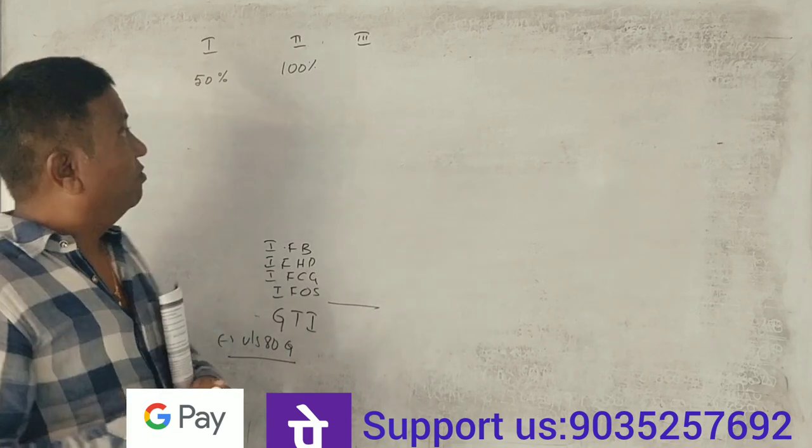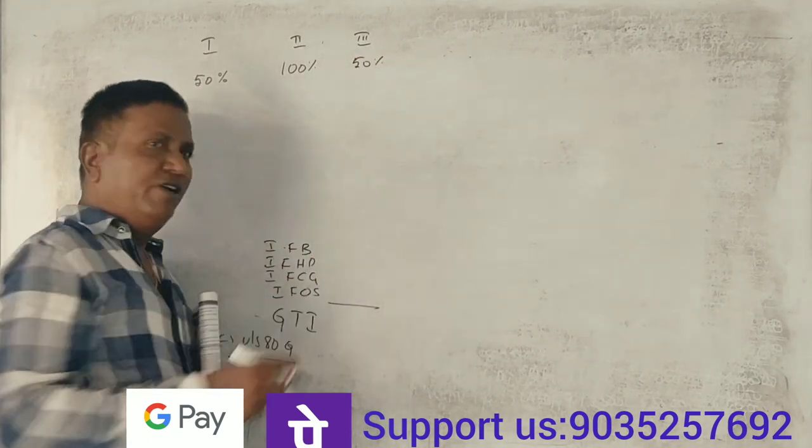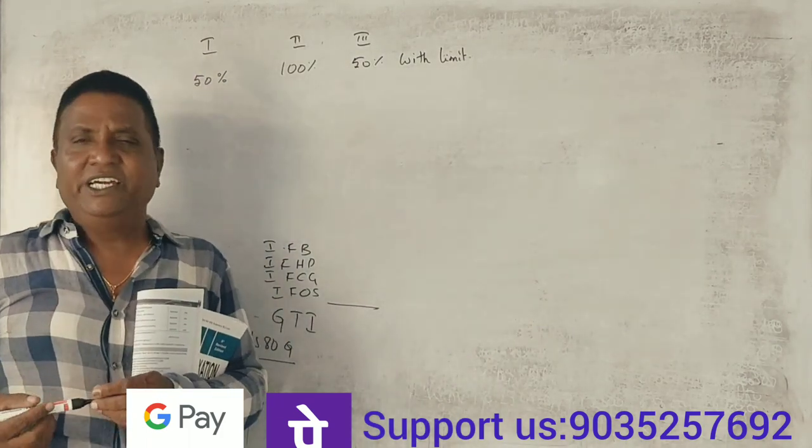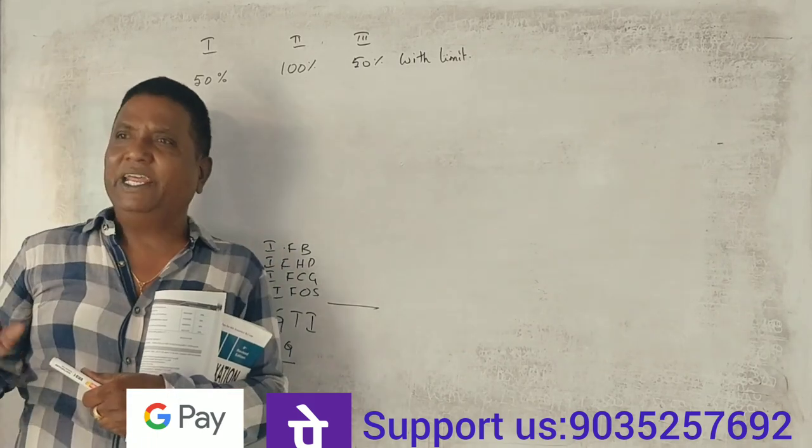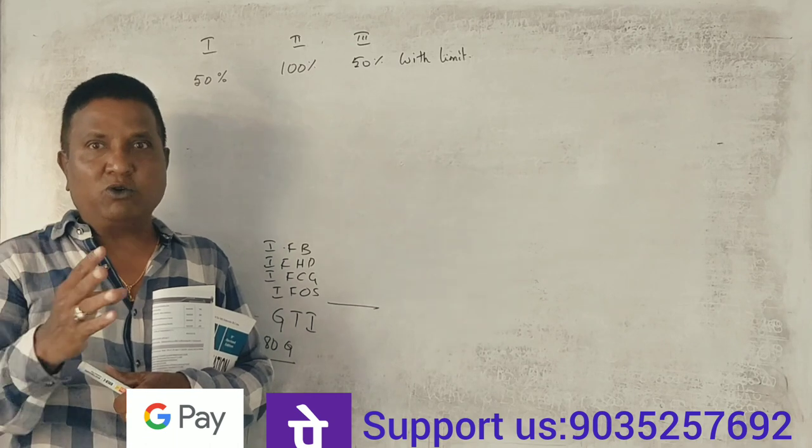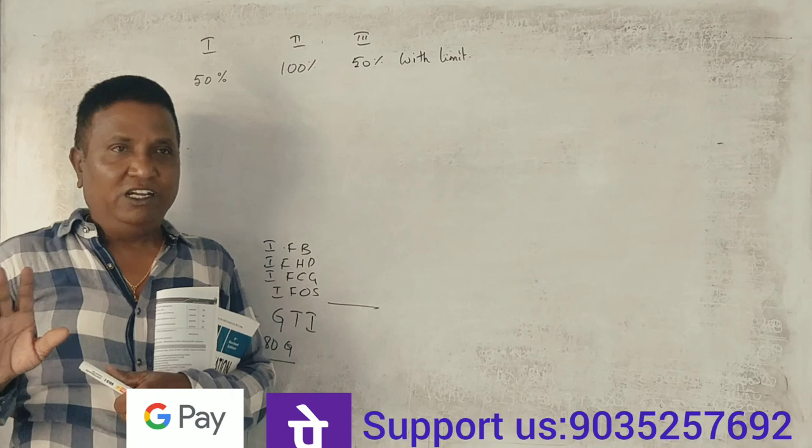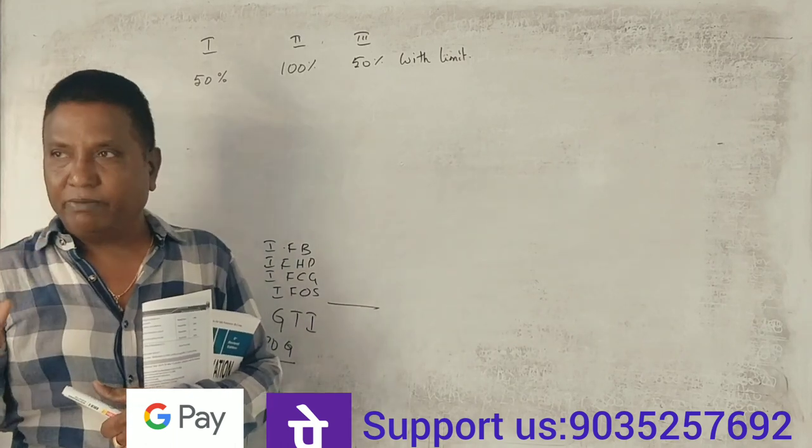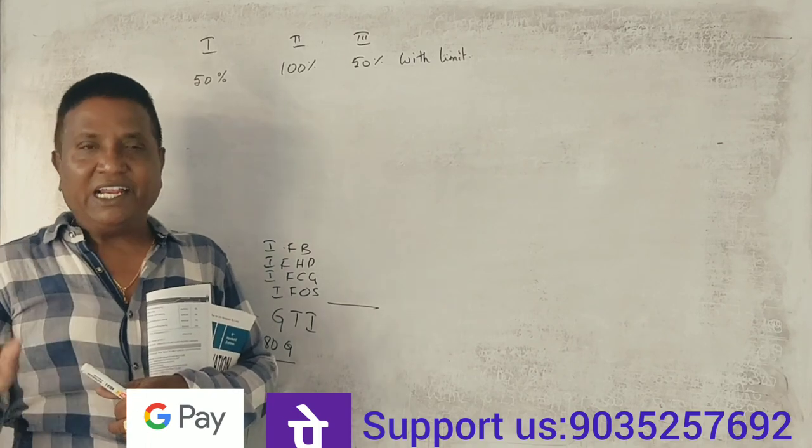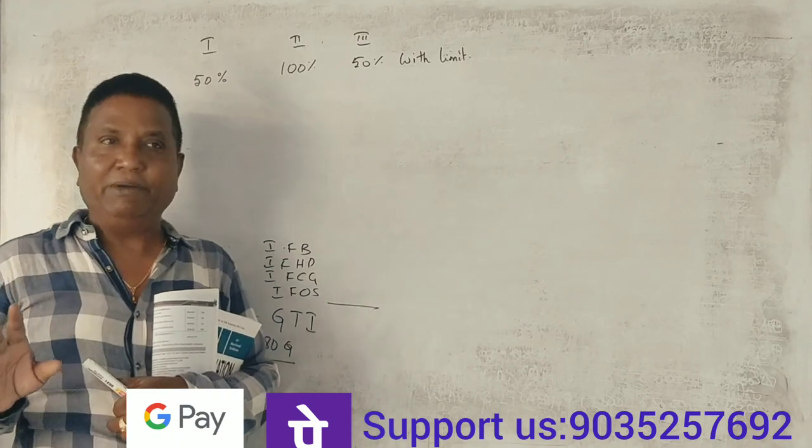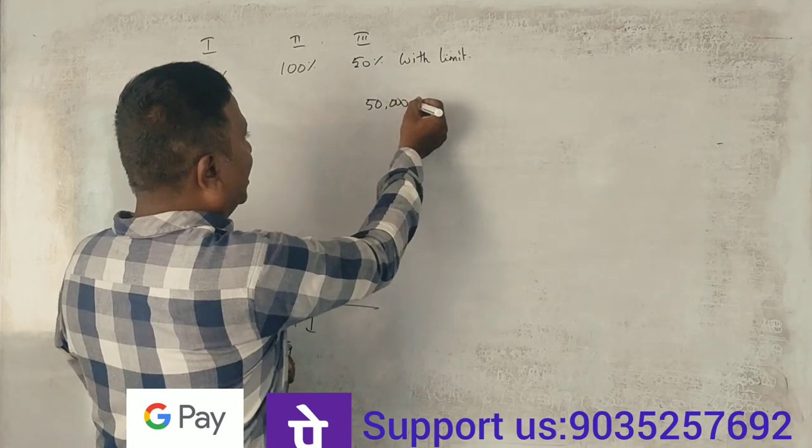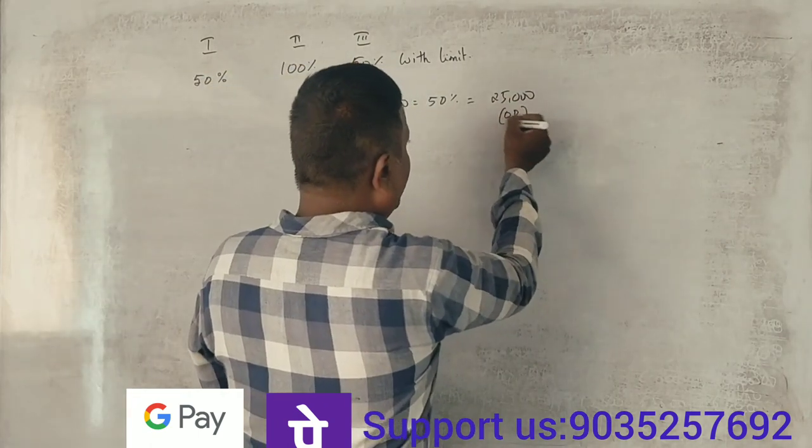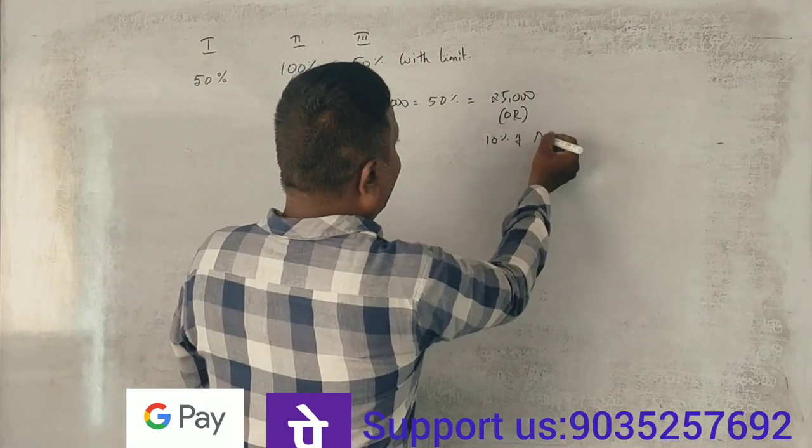Now the third category is 50% with limit. Why is this 50% with limit? It's only for certain donations. If you claim this deduction under 80G, you can get a donation deduction. This is 50% with limit. Suppose you donate 50,000, you get 50% which is 25,000. Now, what do you compare this to? 10% of adjusted gross total income.